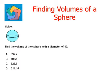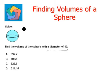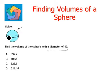The first one says solve: find the volume of a sphere with a diameter of 10. We can see in the given figure that we are given a sphere and the diameter of 10 is given — that is the diameter.